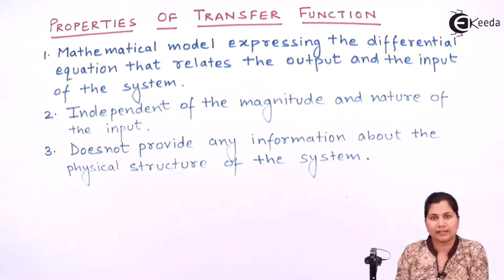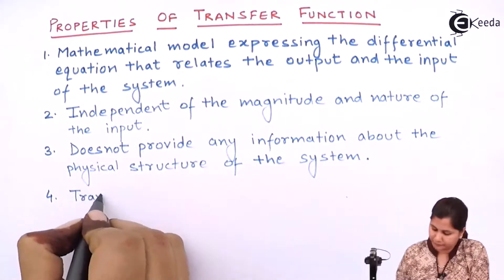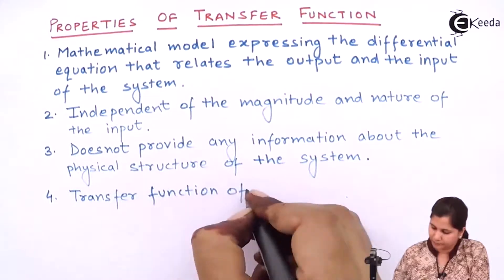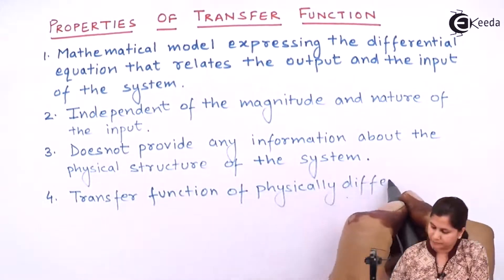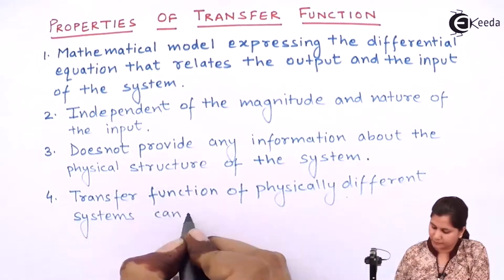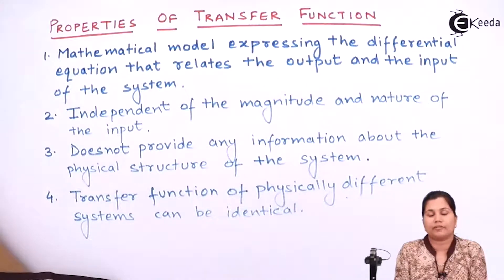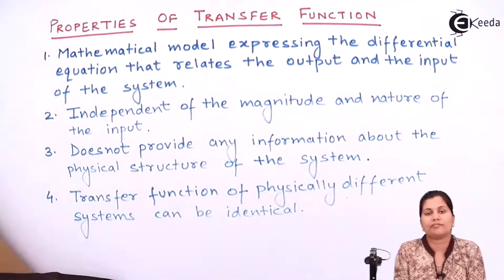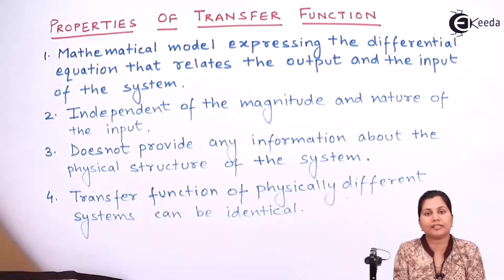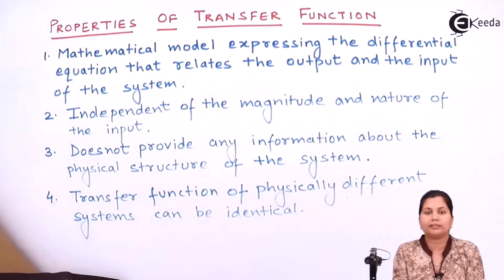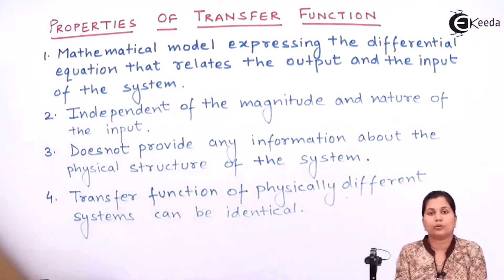The fourth property of transfer function is that transfer functions of systems which are physically different from each other can be identical. It may be possible that two systems which are physically very different — having different numbers of components, different connections, and different physical structure — can still have the same transfer function.